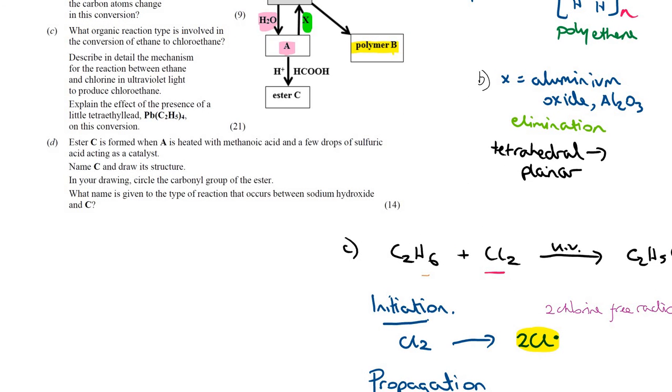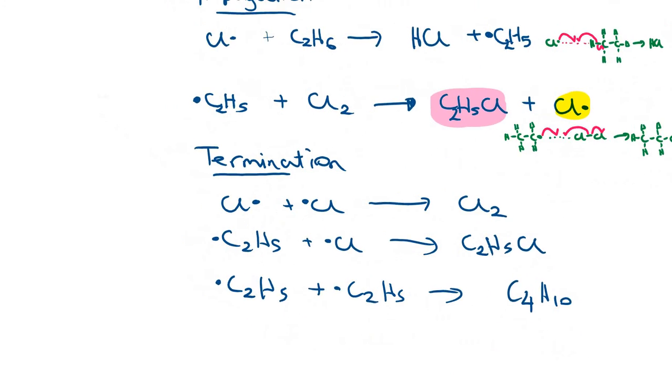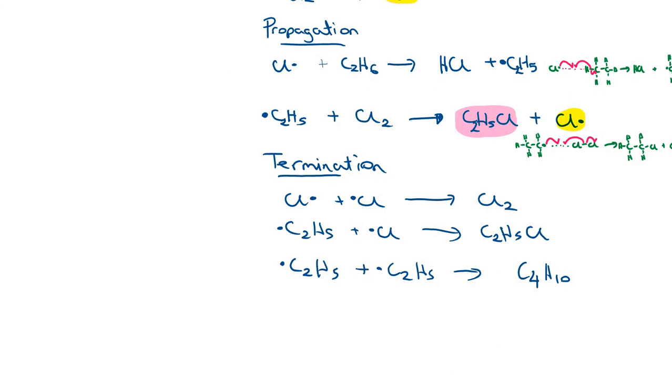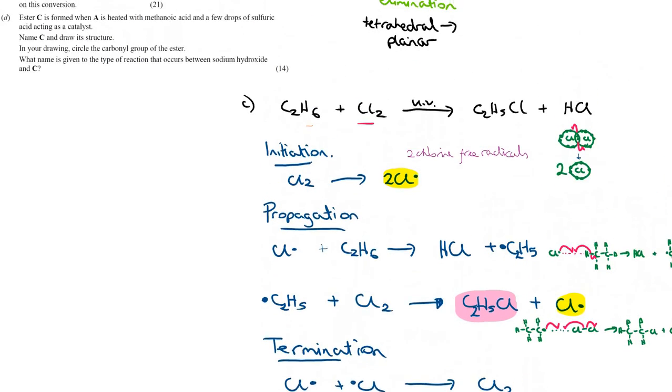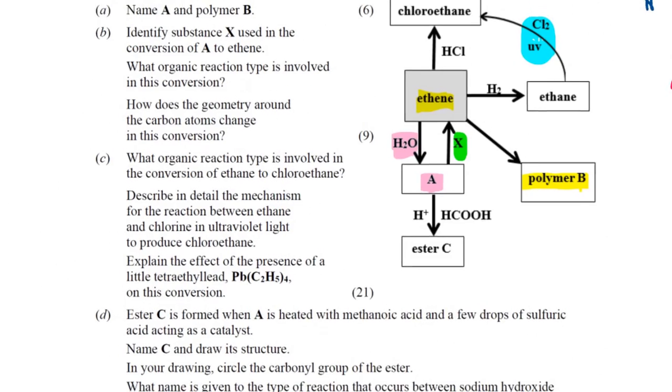Explain the presence of a little tetraethyl lead on this conversion. Tetraethyl lead speeds up the reaction as it provides readily available ethyl radicals. So if there are more ethyl radicals there, the reaction will speed up. Going back here to our questions.